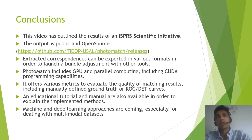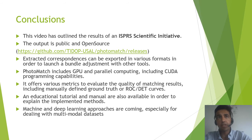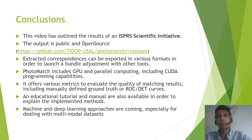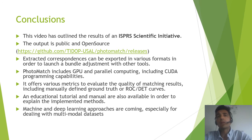Regarding the conclusions, this video has outlined the results of the ISPRS Scientific Initiative. The software output is public and open source — you can see the link here. Extracted correspondences can be exported in various formats in order to launch a bundle adjustment with other tools. Photomatch includes GPU and parallel computing with CUDA programming capabilities. It offers various metrics to evaluate the quality of matching results, including manually defined ground truth or metric curves. An educational tutorial and manual are also available to explain the implemented methods. Matching and deep learning approaches are coming, especially for dealing with multimodal datasets.